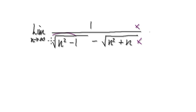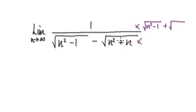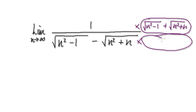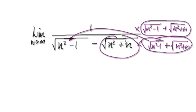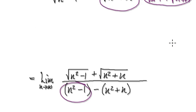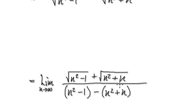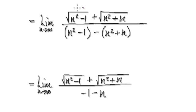Multiply the top and bottom by the conjugate: root n squared plus n, and the opposite sign, plus root n squared minus 1. Then multiplying top and bottom by the conjugate gives you this result here.